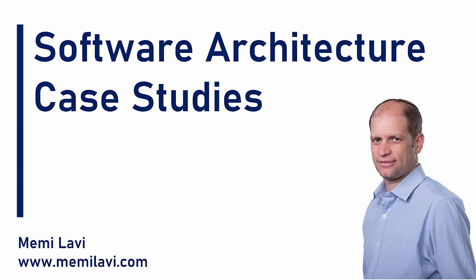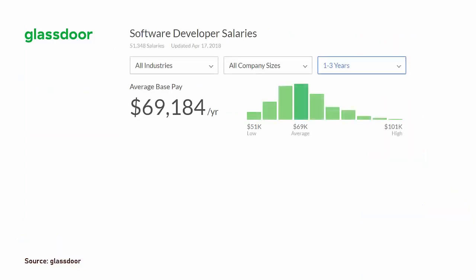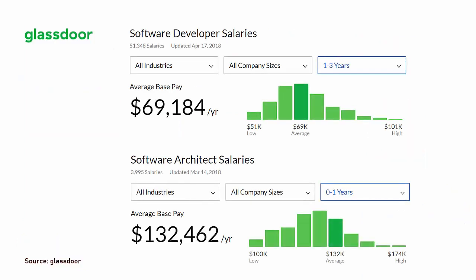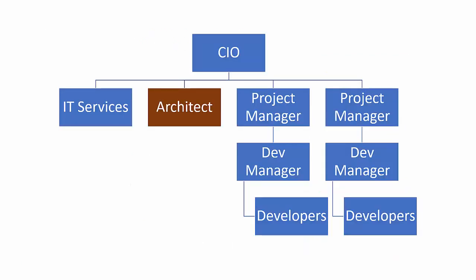Software Architect is one of the most interesting, challenging, and rewarding jobs in the software industry. According to Glassdoor, the average salary of a Software Architect, even a junior one, is almost double the one of a developer. And that's for a good reason — the Software Architect is central to the success of the project or even the company.